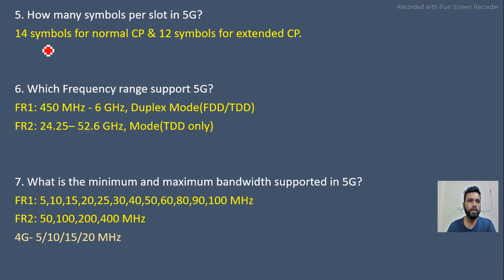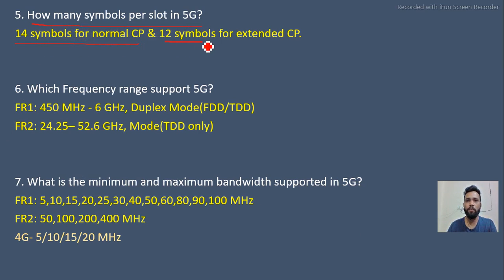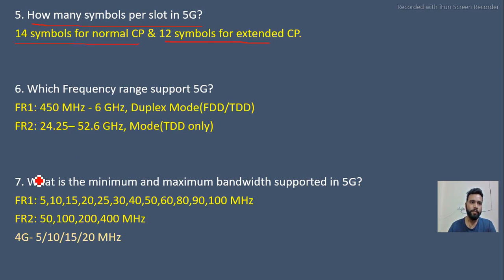Next question: how many symbols per slot in 5G? There are 14 symbols for normal cyclic prefix and 12 symbols for extended cyclic prefix. Next question: which frequency range does 5G support?